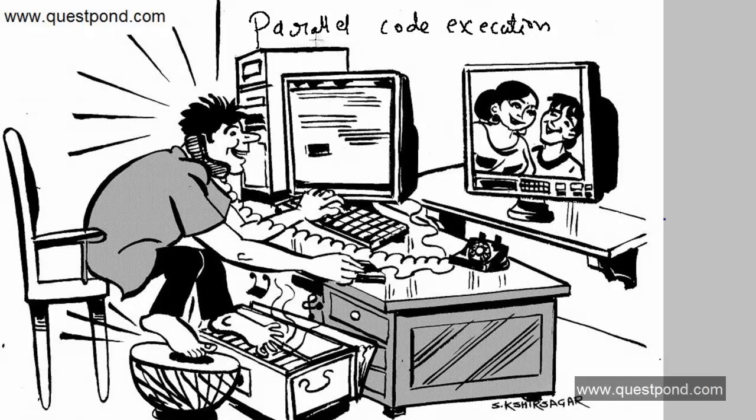Threading in C# means parallel code execution. In other words, let's say that in your C# program you have multiple functions like function 1, function 2, or you have a lot of logic, and sometimes there are situations where you would like to run this logic in parallel. That's what is called threading. Let's create a simple console application in C# and demonstrate threading.